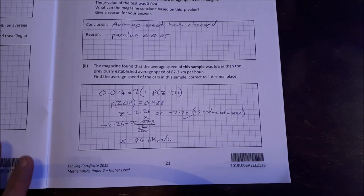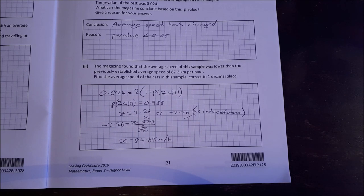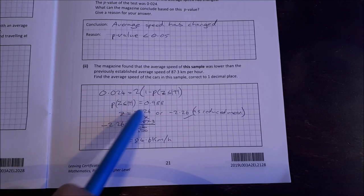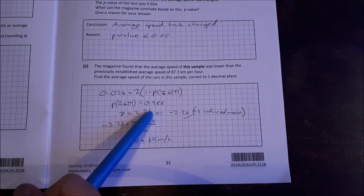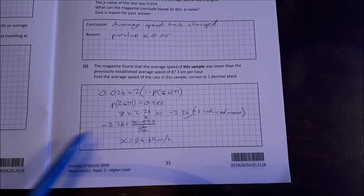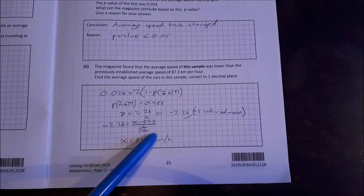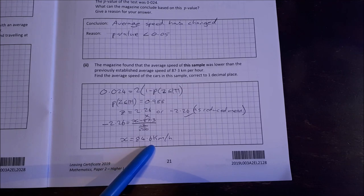If the magazine found that the average speed of this sample was lower than the previously established average speed of 87.3 kilometers per hour, find the average speed of the cars in this sample correct to one decimal place. So our 0.024 is equal to 2 times 1 minus the probability that z is less than or equal to t. So the probability that z is less than or equal to t is 0.988. Our z-score then is 2.6 or minus 2.6. As it is a reduced mean, we have minus 2.6. So we use that minus 2.6 as our z-score, x minus x-bar over sigma, to get x is 84.6 kilometers per hour.